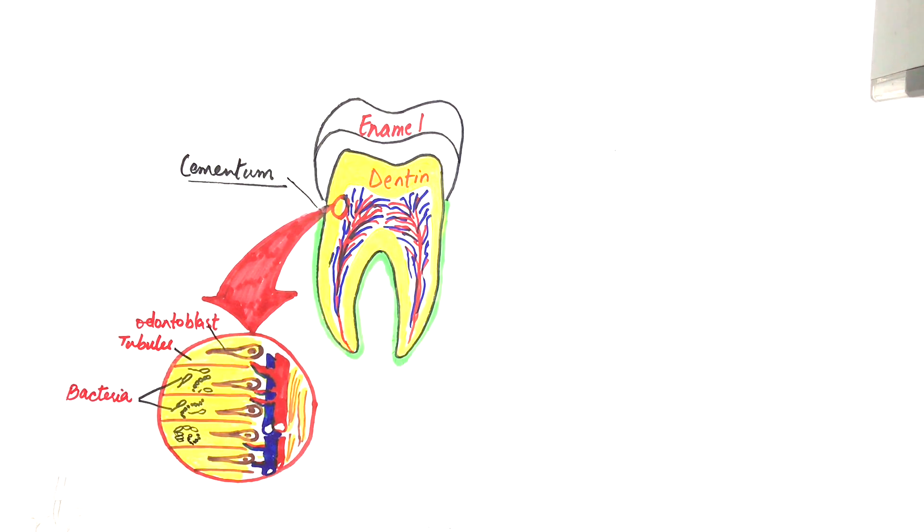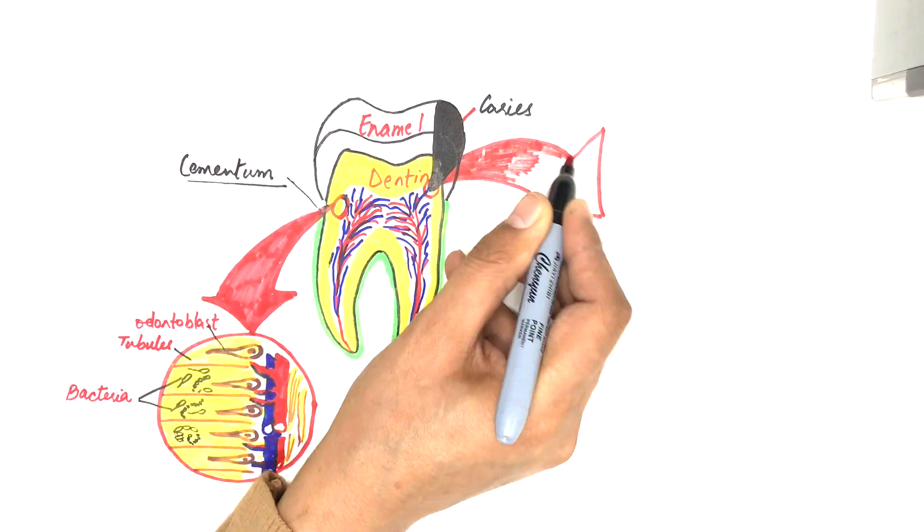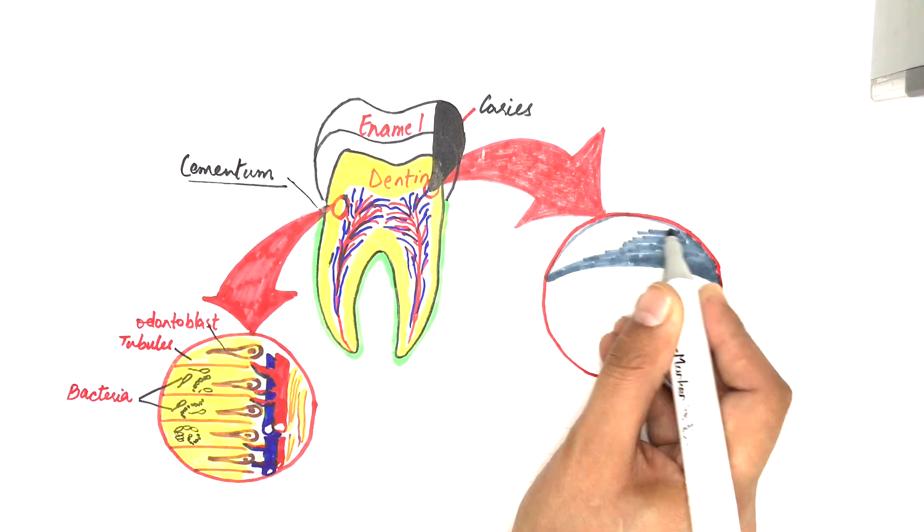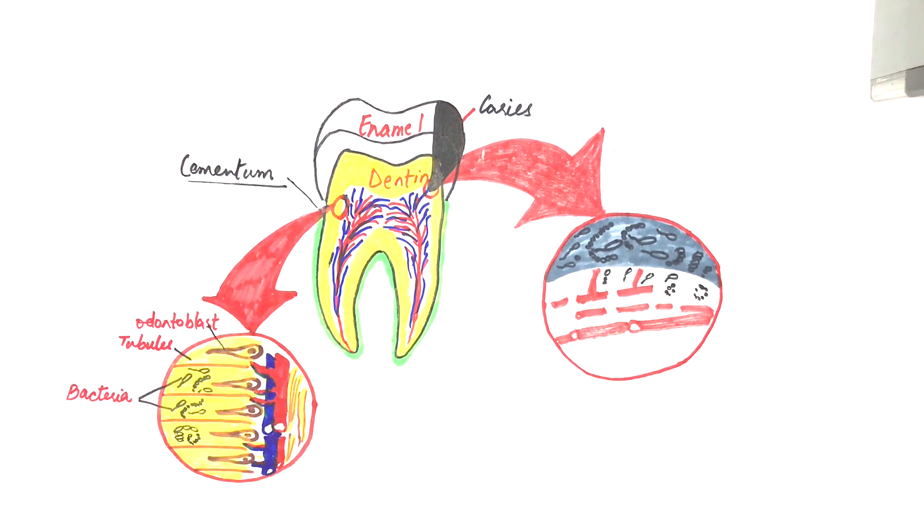Bacteria might get a direct entry into the tooth pulp in cases of extensive caries lesions leading to pulpal inflammation known as pulpitis.